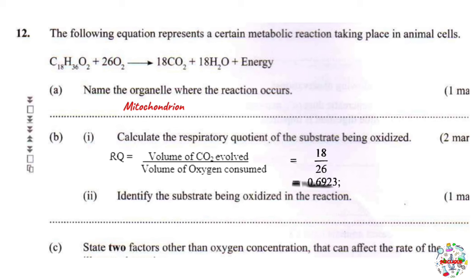Identify the substrate being oxidized. There are three possibilities: glucose (carbohydrate), lipid, or protein. The respiratory quotient tells us two things: whether respiration is aerobic or anaerobic, and the type of substrate. If RQ is 1 or close to 1, the substrate is a carbohydrate; if RQ is 0.7, it is a lipid; if it is anaerobic, RQ is above 1.